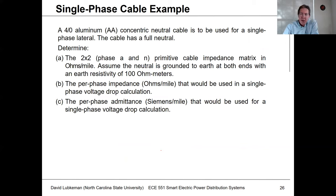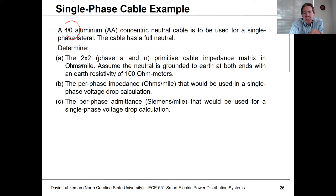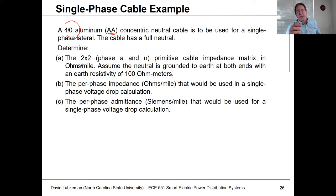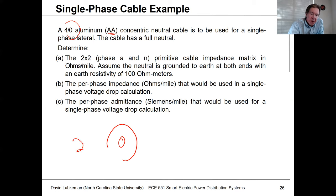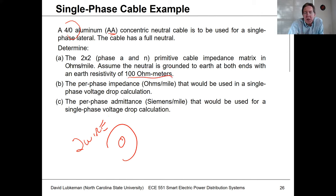Let's look at a single-phase cable example. We have a 4/0 aluminum concentric neutral cable used for a single-phase lateral, like residential single-phase service. This gives us a two-wire system and a 2×2 primitive impedance matrix. We'll assume earth resistivity of 100 ohm-meters. The goal is to calculate the primitive impedance matrix, the equivalent per-phase series impedance, and the per-phase admittance.